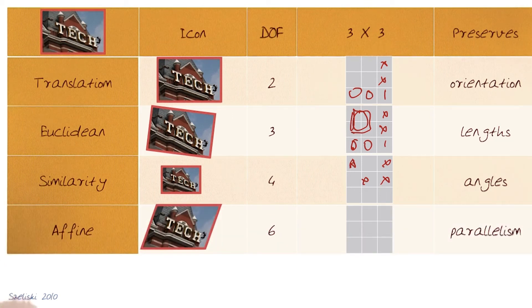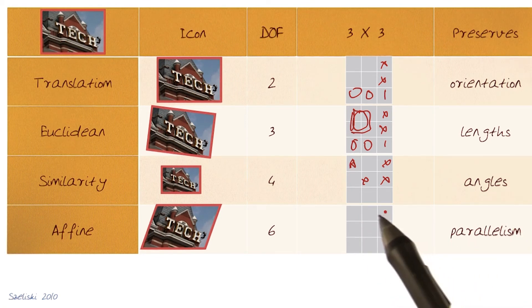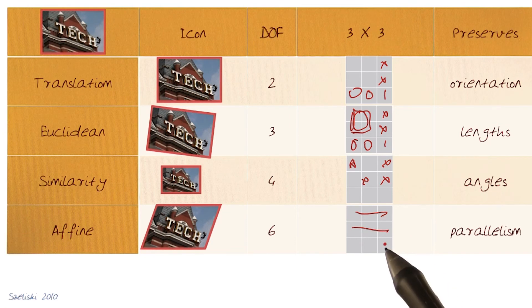For affine, we've looked at this just in the quiz before. Everything that would be preserved, parallelism would be preserved. Lines would be straight and everything else. We also know that the six parameters here would be the ones we would need to model, and that's the six degrees of freedom.